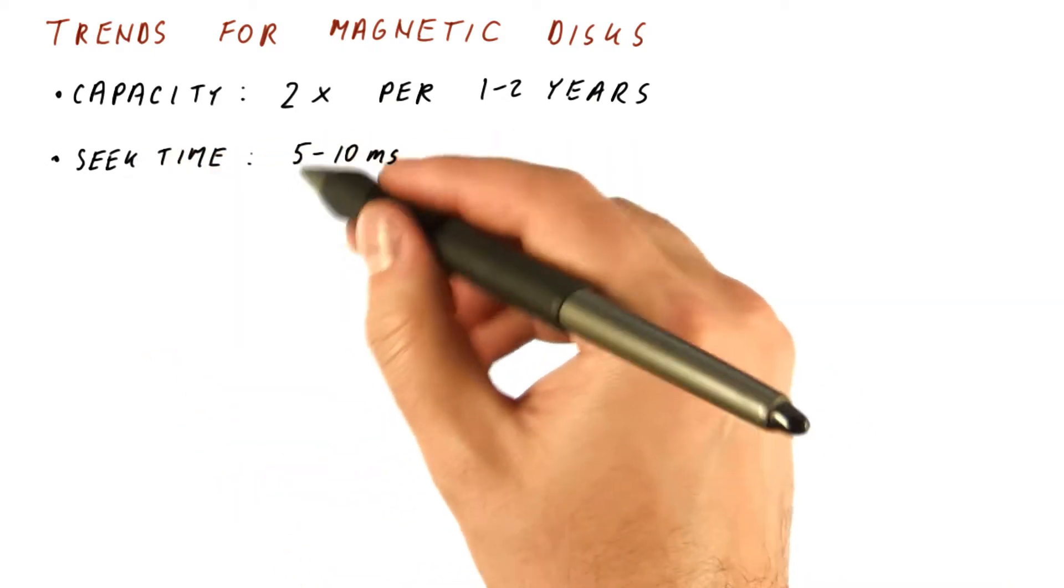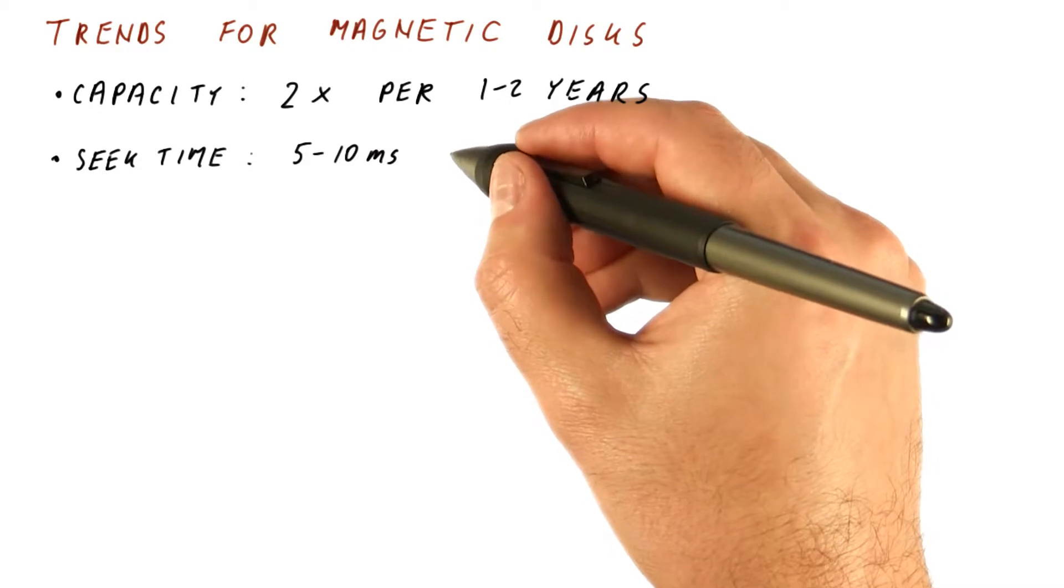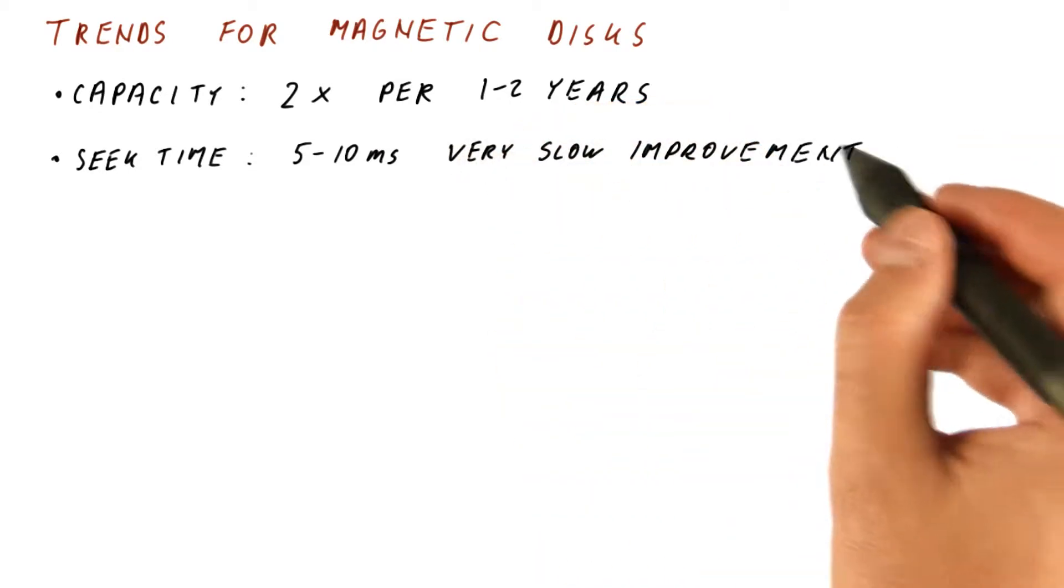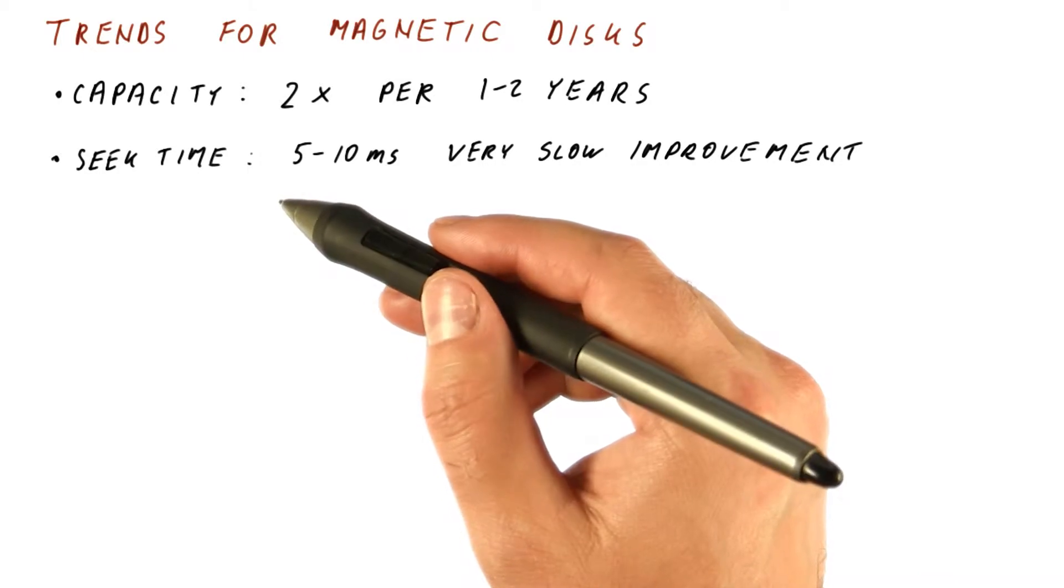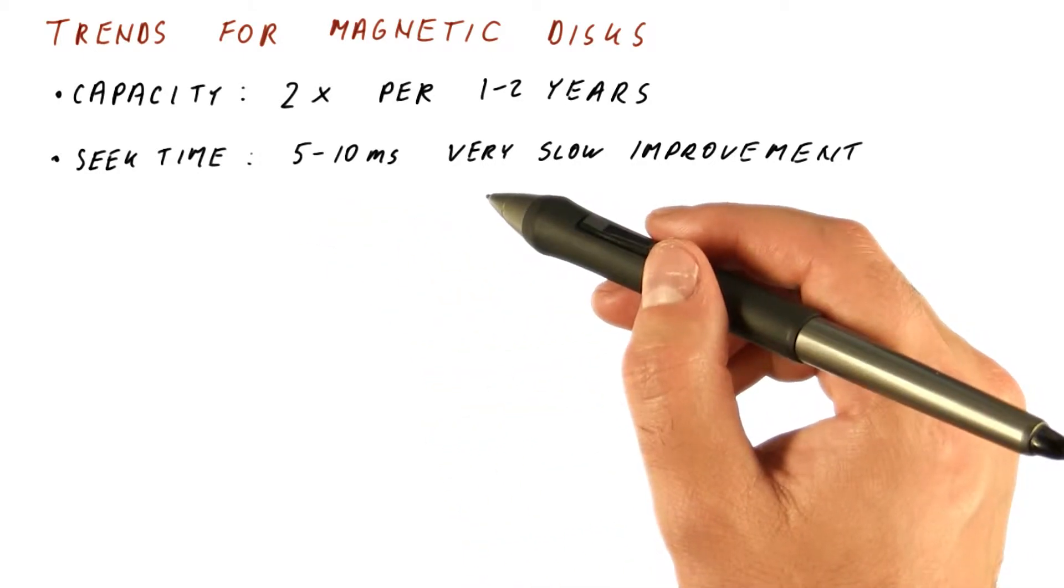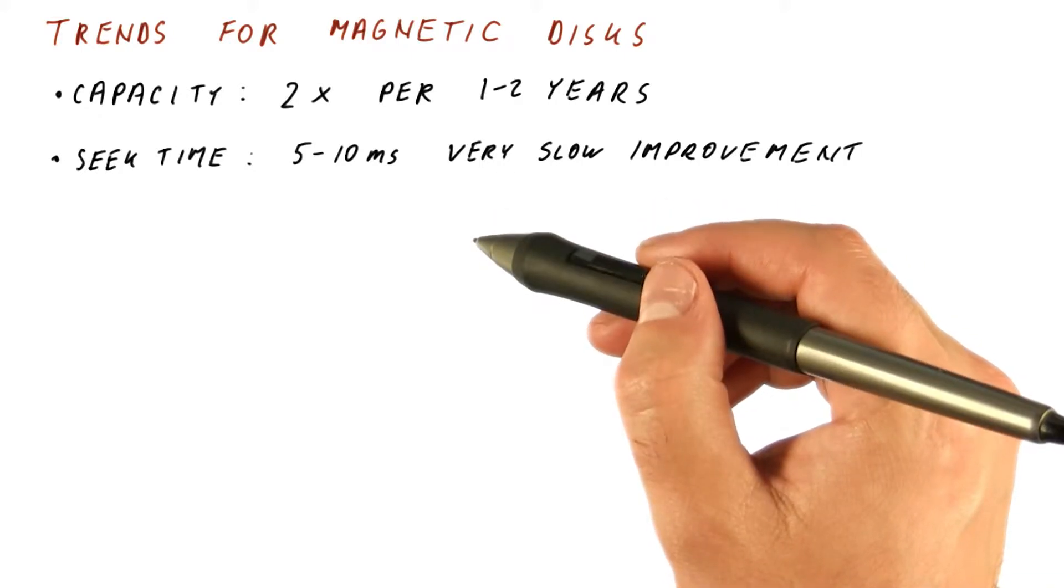The seek time has consistently been five to ten milliseconds over a number of years with very slow improvement. The only things that really improve the seek time is if we either make a faster motor that can still move the head assembly very precisely, which is very hard to do, or if we make the platter smaller so that we traverse a smaller distance.